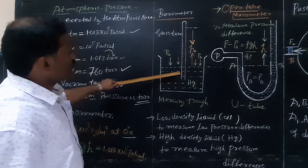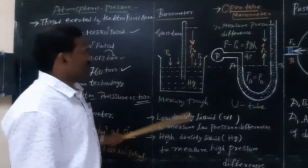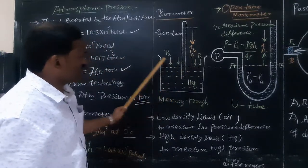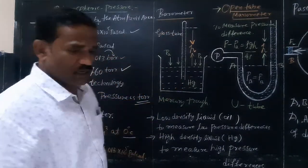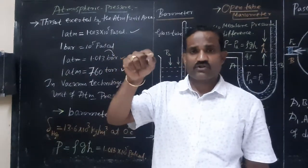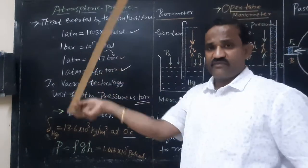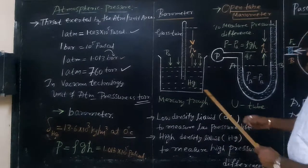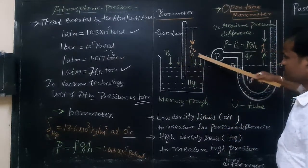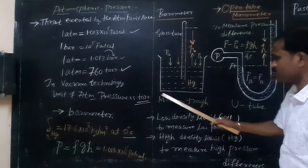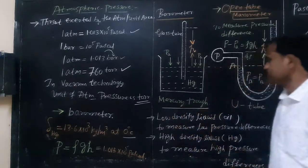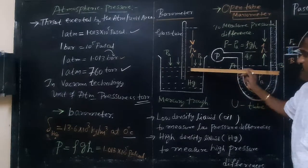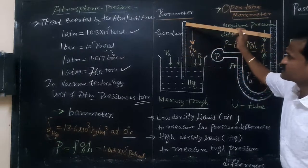The barometer consists of a glass tube filled with mercury. One end is closed, and the other end is immersed in a container — a trough — containing mercury. The pressure exerted by the air molecules acts on the surface of the mercury present in the trough. Whatever atmospheric pressure is exerted on the surface of the mercury equals the mercury level that rises in the glass tube.